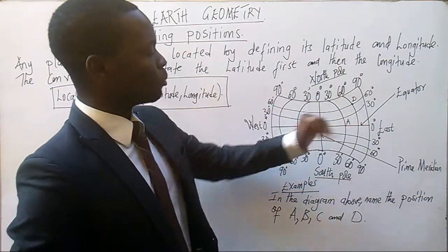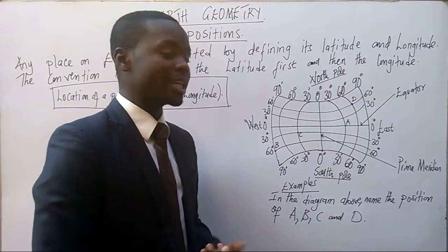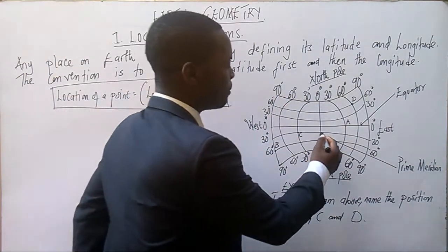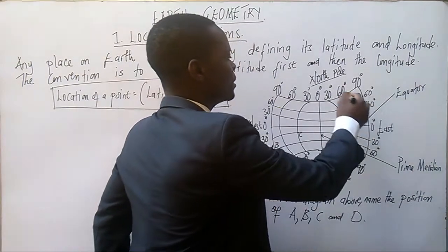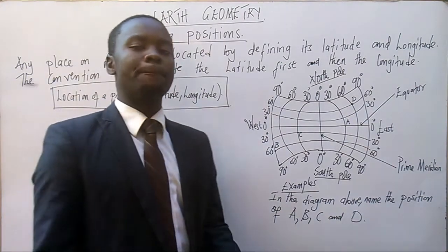This is our globe here. From this globe, we have got the longitudes, we have got the latitudes. This is our prime meridian, this is our equator, this is our north pole, south pole, this is west and east. In short, it's our compass.